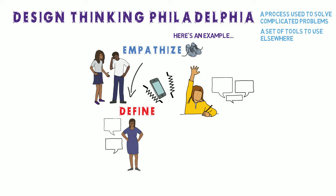Once they know everything they can, they think of creative ways to solve their problem, in the ideate stage. They may think of realistic ideas to limit class distractions, like banning cell phones, or more creative ideas, like a reward system for good cell phone use.